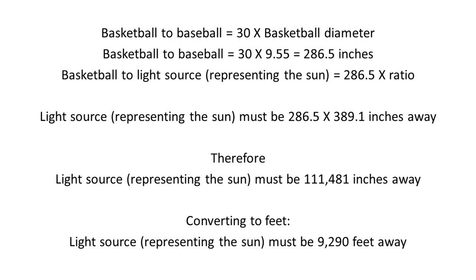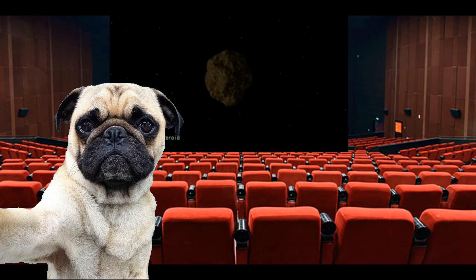Now we know the distance between your basketball and baseball in your experiment to be approximately 286.5 inches. So if we multiply that by our ratio that we got from the previous calculation, we get that the distance to the light source, which would represent the Sun in this case, would be 111,481 inches approximately. If we divide this by 12 to convert it into feet, we come up with 9,290 feet. That is the distance your light source would have to be in order to make the experiment you describe representative of reality.